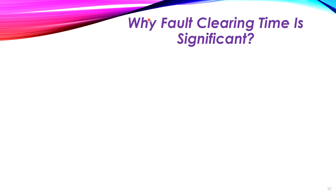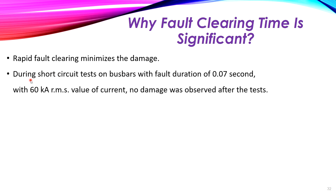Why is the fault clearing time significant? Number one: rapid fault clearing minimizes damage to equipment or the power system. As an example, during a short circuit test on bus bars with a fault duration of 0.07 seconds and a fault current of 60 kilo-amperes RMS, no damage was observed.